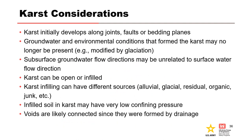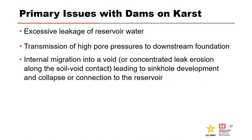Here are some key considerations when evaluating karst. Karst initially develops along joints, faults, or bedding planes. Groundwater and environmental conditions that formed the karst may no longer be present, and subsurface groundwater flow directions may be unrelated to surface water flow direction. Karst can be open or infilled; infilling can have different sources such as alluvial, glacial, residual, organic, or anthropogenic material. Infilled soil in karst may have very low confining pressures, and the voids in karst are likely interconnected since they were formed by drainage. The three primary issues with karst are excessive leakage of reservoir water, transmission of high pore pressures to the downstream foundation, and internal migration into a void or concentrated leak erosion along the soil-void contact that leads to sinkhole development and collapse or connection to the pool.